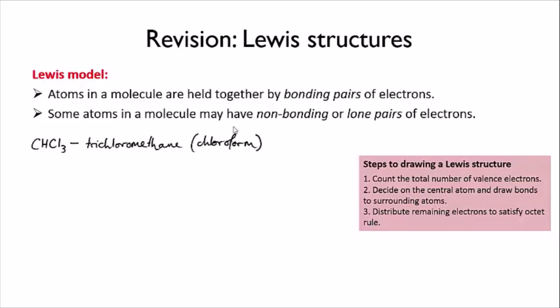So first we're going to total up the valence electrons. Four for carbon, one for hydrogen, three times seven for the three chlorines. That gives us a total of 26.